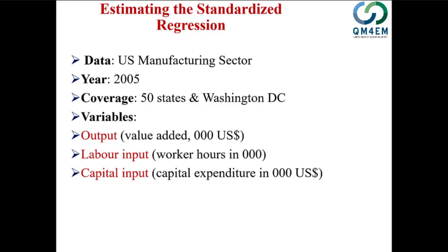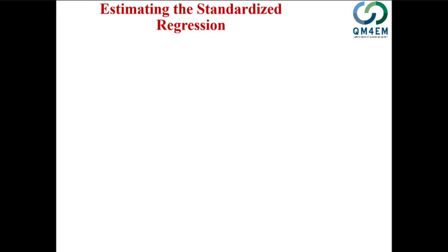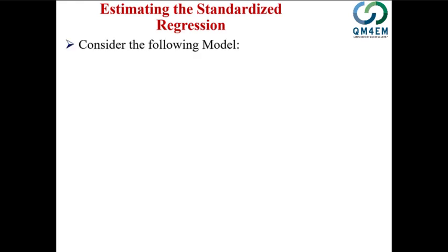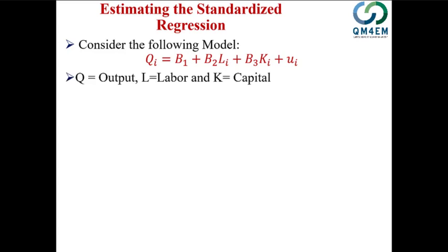Before going to eViews and estimating the standardized regression model, let me show you the theory part. The standard regression model could model output as a function of labor and capital, where Q is output, L is labor, and K is capital respectively. In the standard regression model we use labor and capital variables as they are — measured in labor hours, capital in thousands of dollars, and output in thousands of dollars.